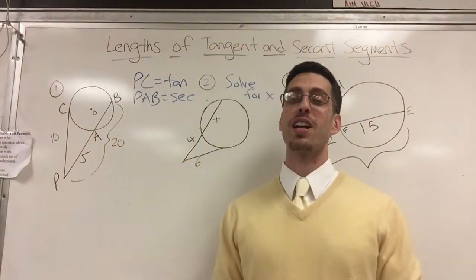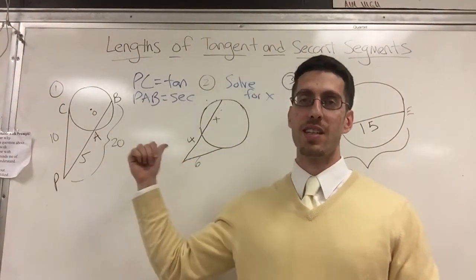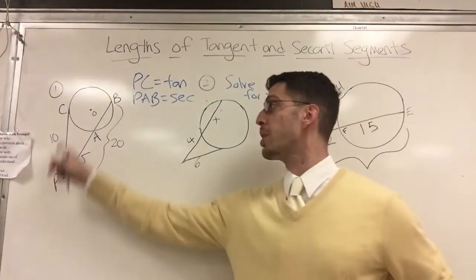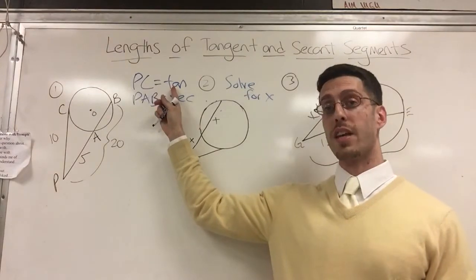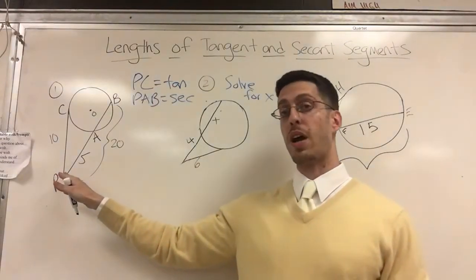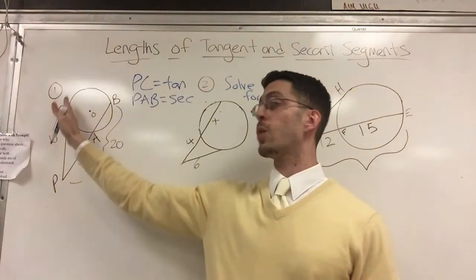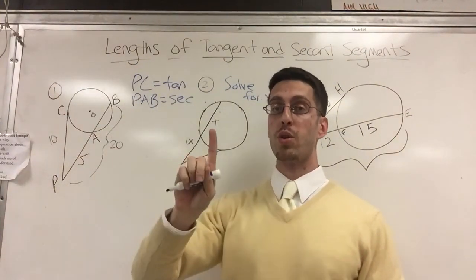What's up math fans, today we're looking at tangents and secants. I would like you to understand that PC is considered a tangent segment because it goes from an external point to one point on the circle. It does not go through the circle. If extended, it would not go through the circle - it touches the circle only once.